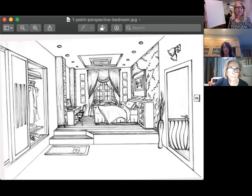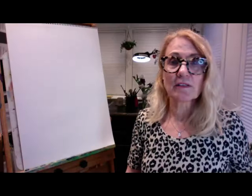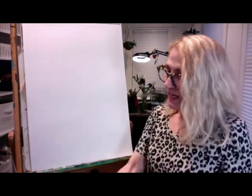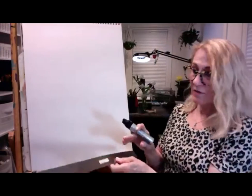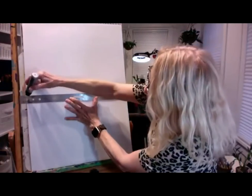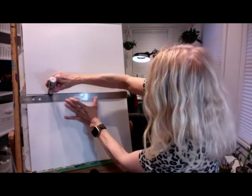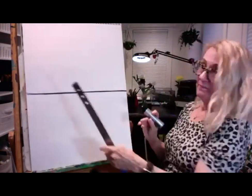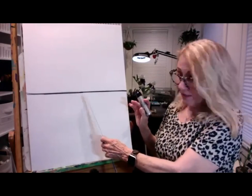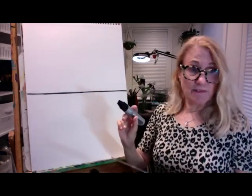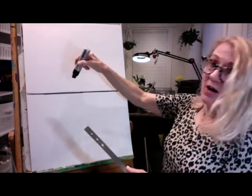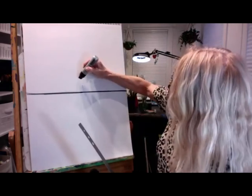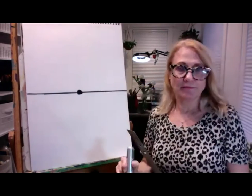The elements of perspective are really kind of simple. We have what's called a horizon line — that's just taking a horizontal line across the page. The horizon is where the earth meets the sky. And on the horizon, or even beyond it, we have what's called a vanishing point. I'm going to put my vanishing point on the horizon line right now, just for now.